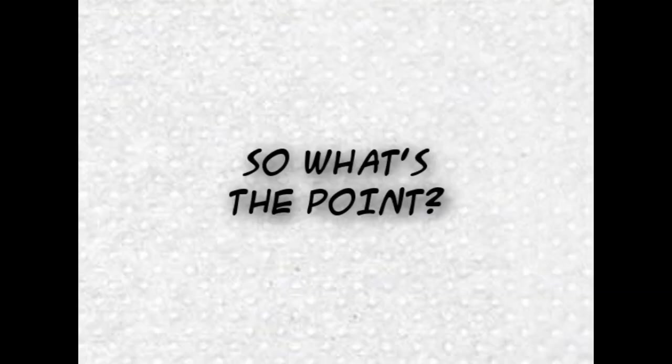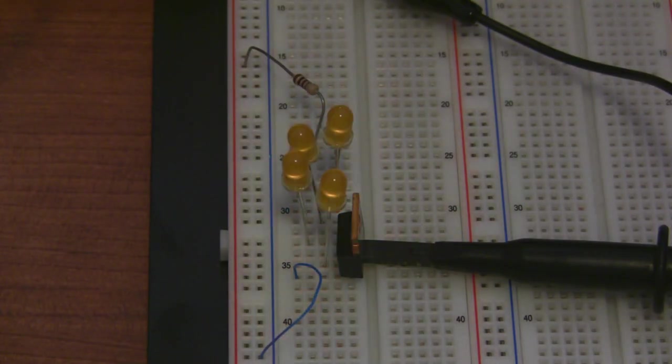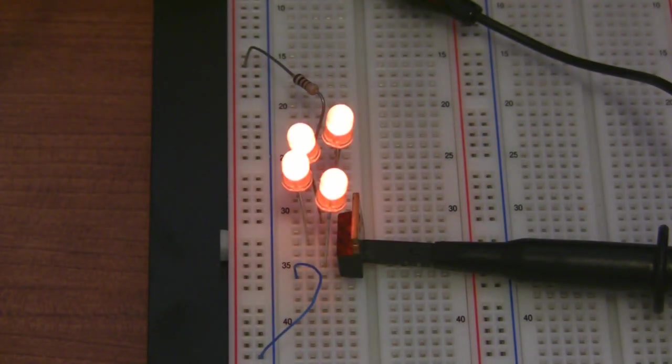So what's the real world application of all of this? Well, basically the function generator saves you the time and hassle of having to build oscillators when you're prototyping a circuit. Let's run through a real world example where we make an LED dimming circuit.